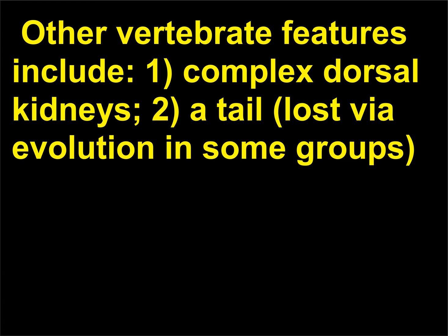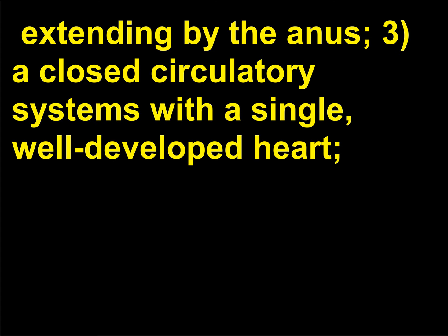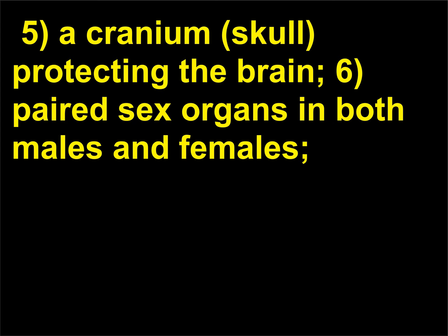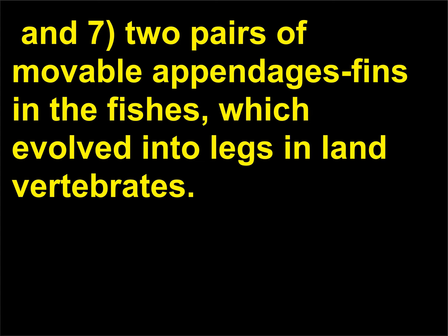Other vertebrate features include: 1) complex dorsal kidneys; 2) a tail, lost via evolution in some groups, extending beyond the anus; 3) a closed circulatory system with a single, well-developed heart; 4) a brain at the anterior end of the spinal cord, with 10 or more pairs of cranial nerves; 5) a cranium or skull protecting the brain; 6) paired sex organs in both males and females; and 7) two pairs of movable appendages — fins in fishes, which evolved into legs in land vertebrates.